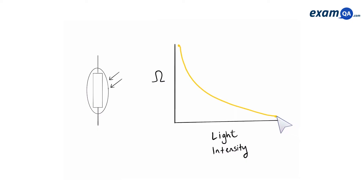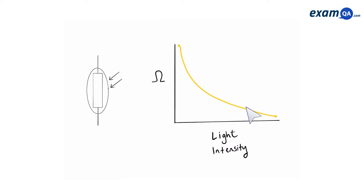It follows a shape that looks similar to this. A good way to remember this is that when it's dark, the electrons are scared to move, and therefore resistance is high. And when it's bright, they're not scared anymore and they can move around. Remember, don't write this in your exam — it's just a good way to help you remember the pattern.